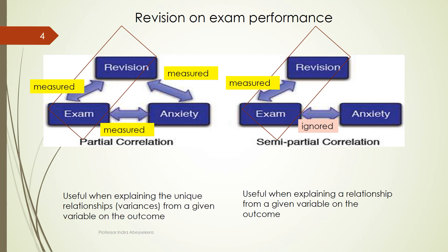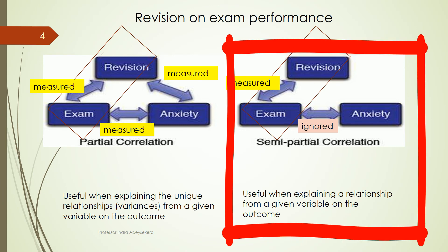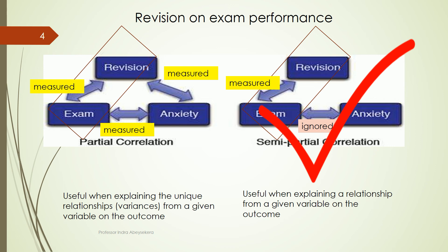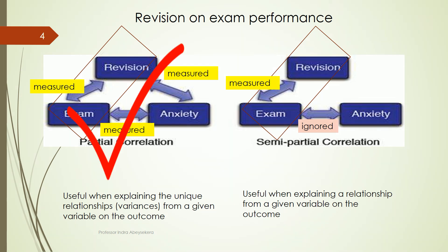When it comes to semi-partial correlation, we account for the common variance offered by the anxiety variable (the third variable) on exam performance, and when we look at the revision variable as a predictor we examine it individually. Semi-partial correlation becomes useful when explaining a relationship from a given variable on the outcome, whereas partial correlation becomes useful in explaining the unique relationship and the common variances offered by a given predictor.